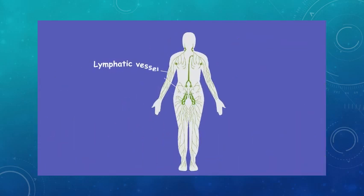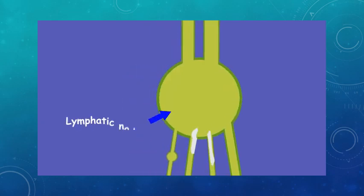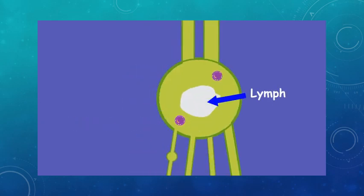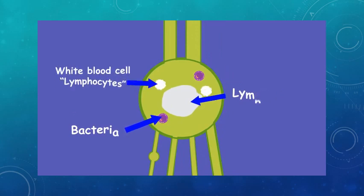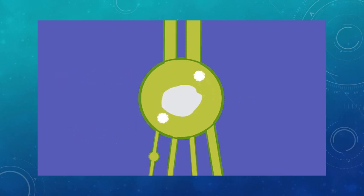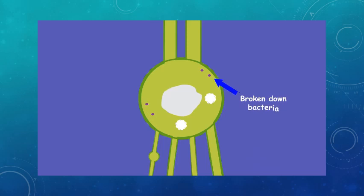This is happening in millions of little lymphatic vessels in your body every minute of every day. The lymph nodes filter the lymph, destroying or trapping anything harmful. The lymph nodes contain white blood cells called lymphocytes, which attack and break down bacteria, viruses, damaged cells, or cancer cells. This filtering and destroying is an important part of our immune system and stops harmful substances being fed back into our bloodstream.